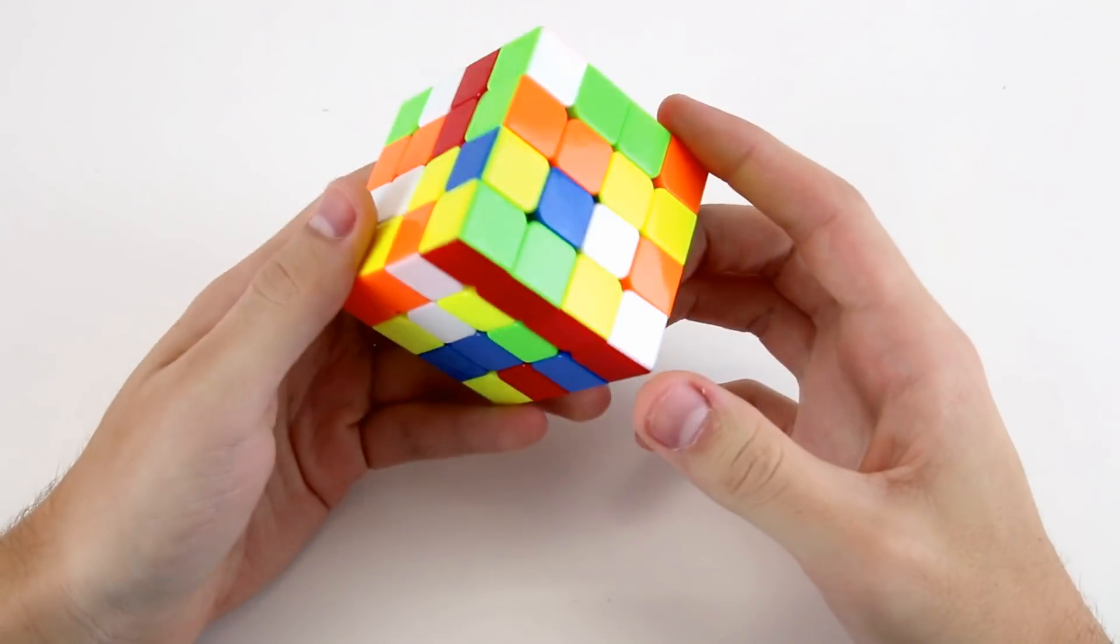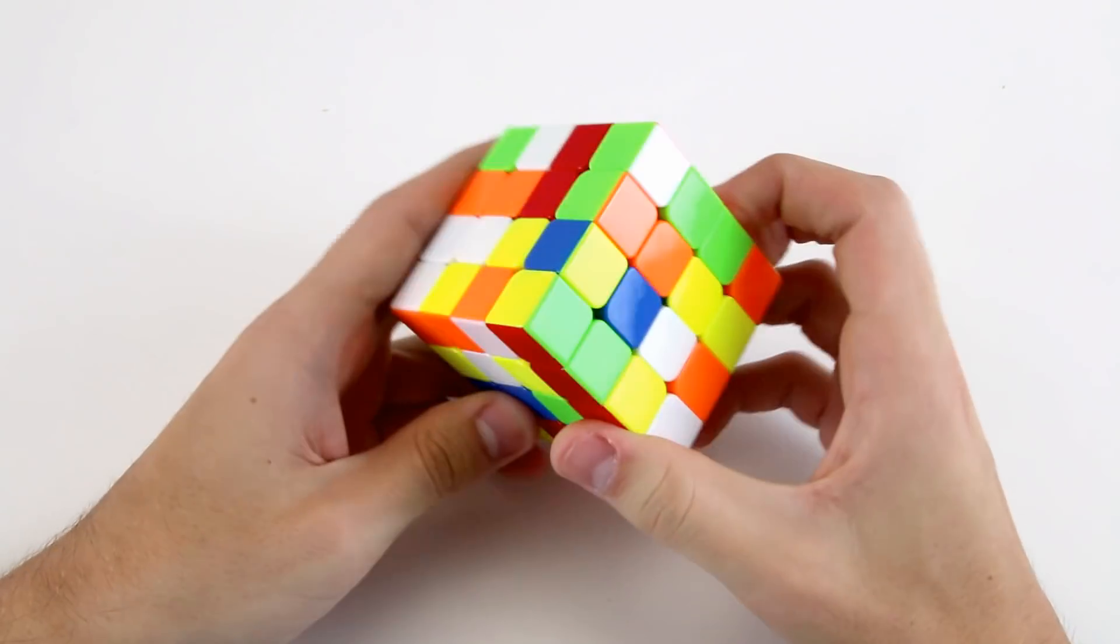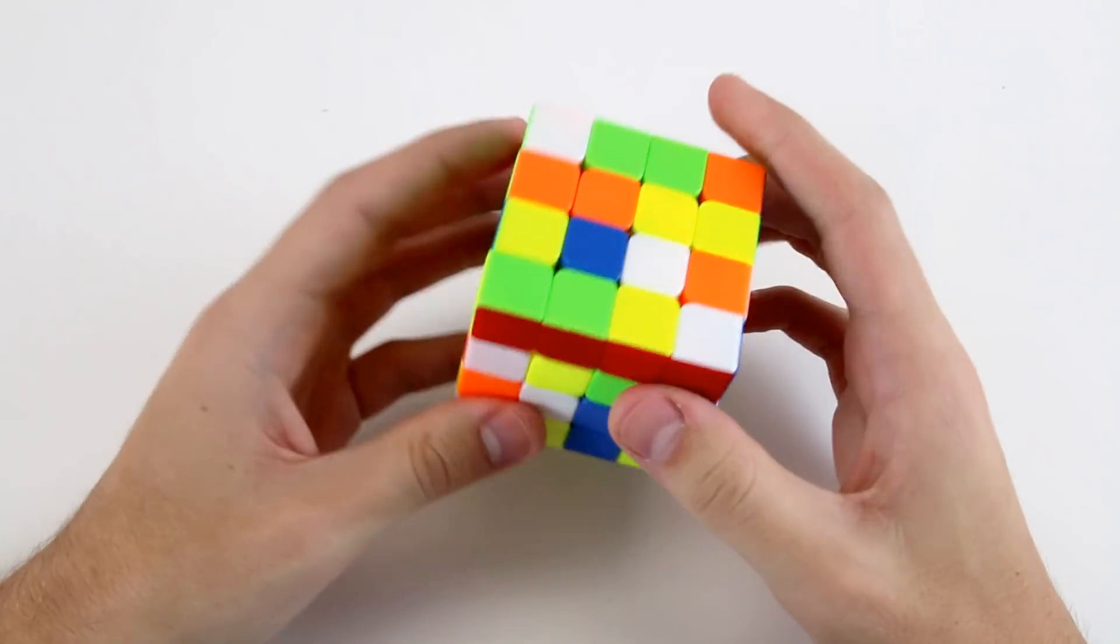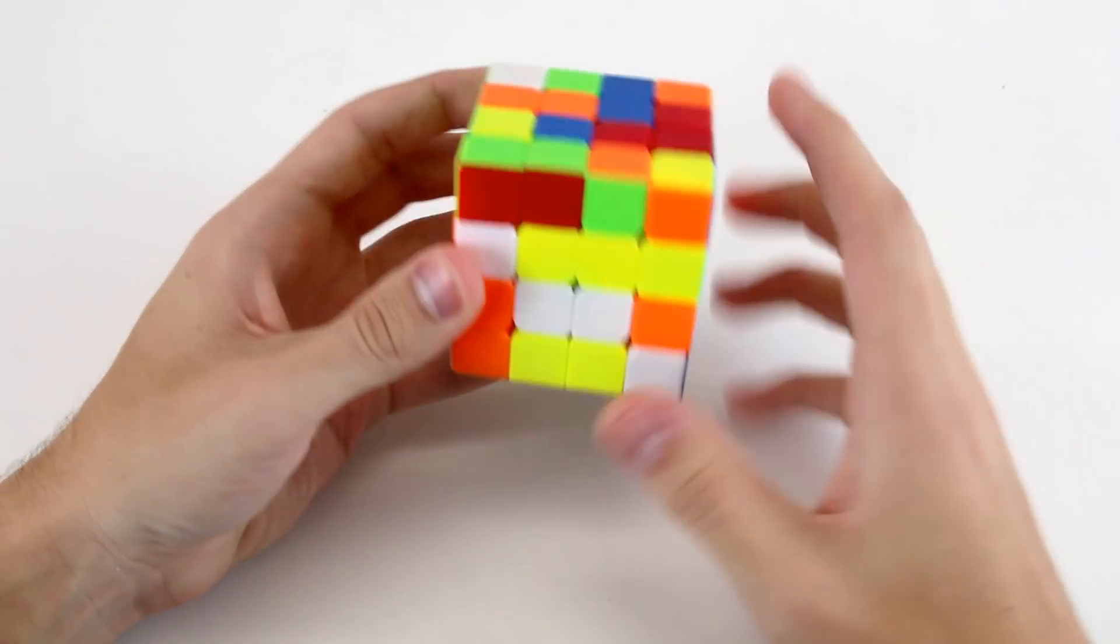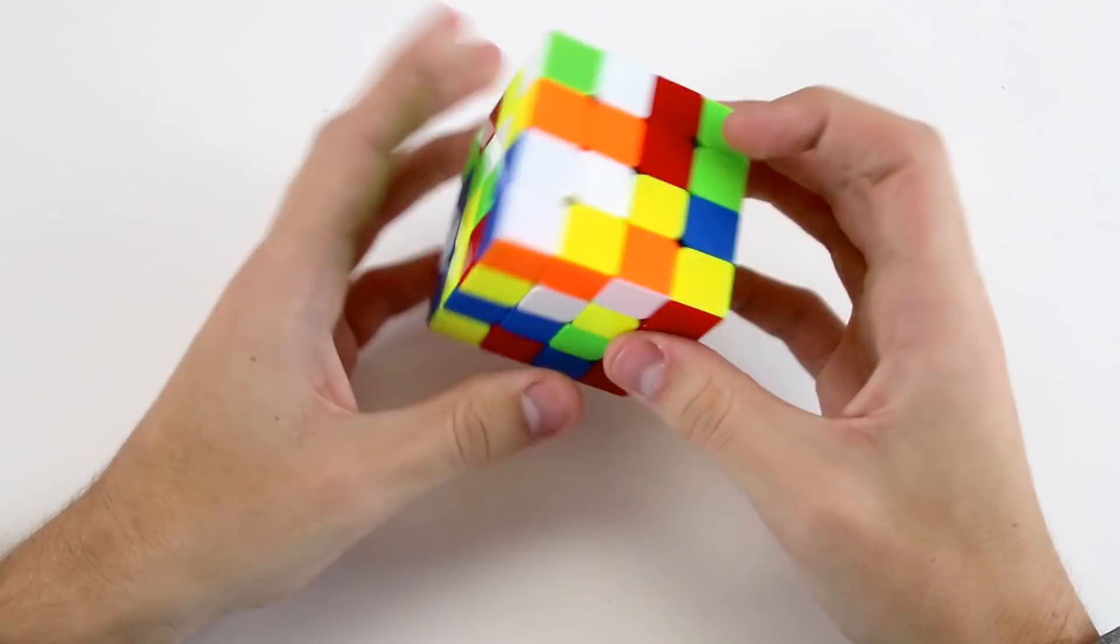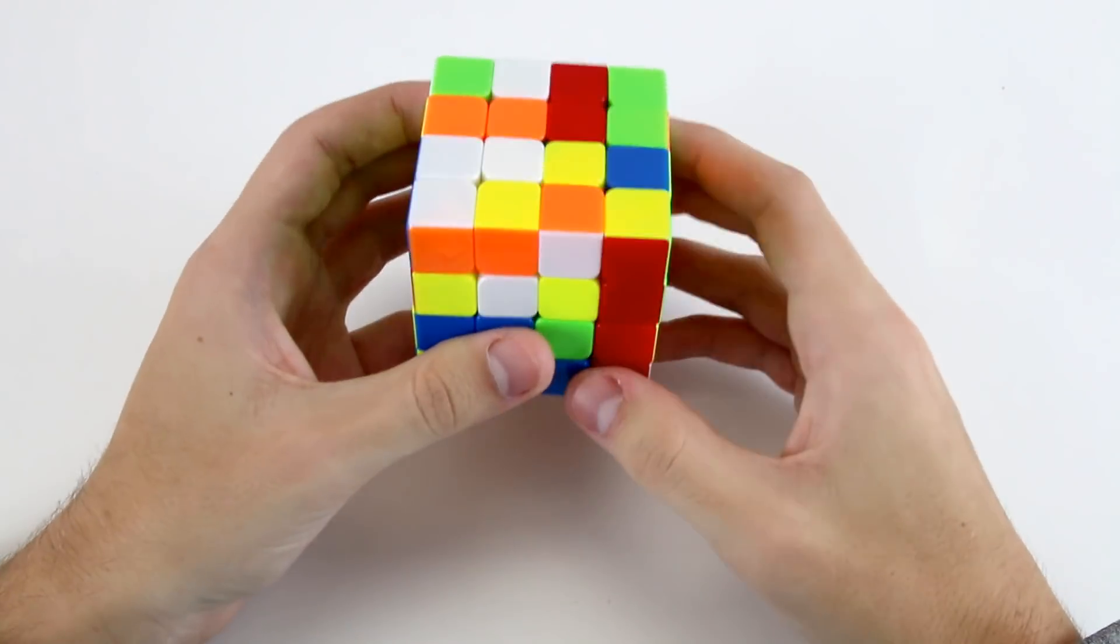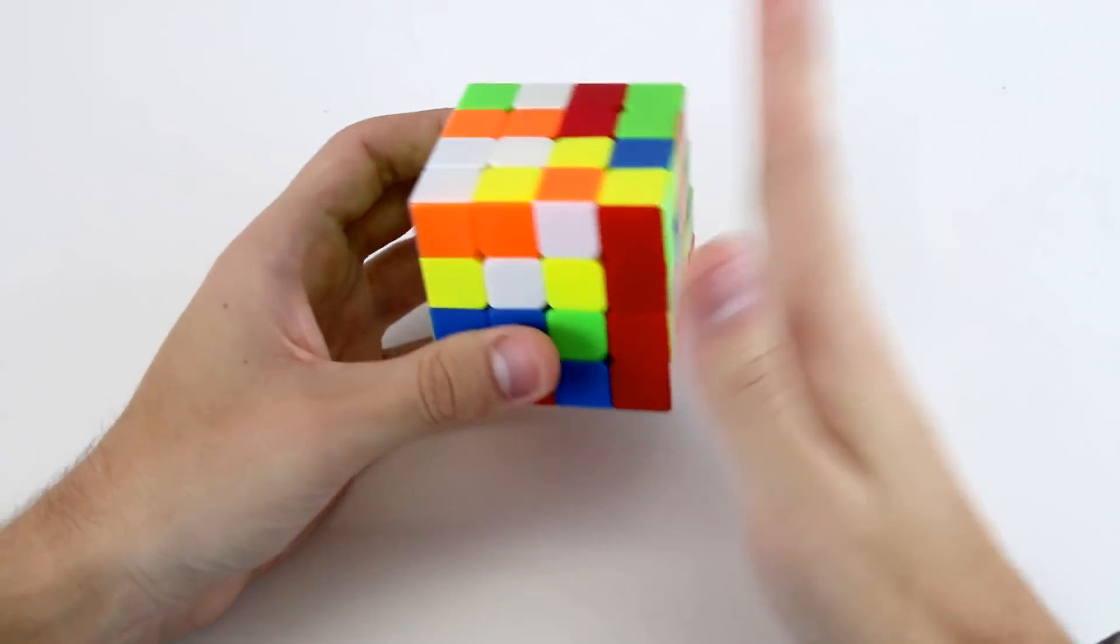In this example solve we can have a look around first and see whether we're going to do the white or the yellow center first. I do notice that from this angle if I do a wide r prime I'm going to get these two bars which is very handy and I think I'm going to actually execute it so that my white center will end up on this right hand side.